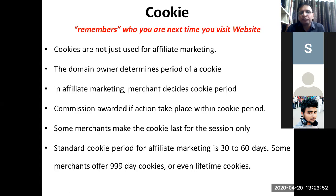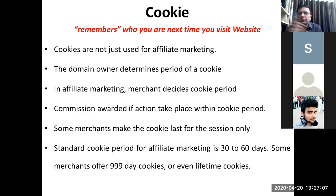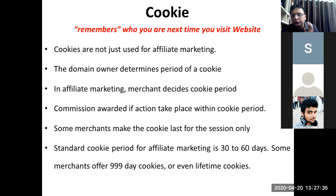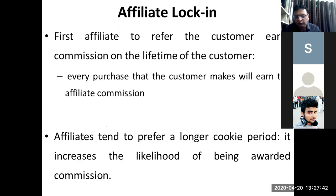Cookies need a defined time frame — how long the cookie will store the data. Generally that could be 30 to 60 days. If the customer goes to the affiliate website, clicks an advertisement, and goes to the merchant website, any repeat visit or transaction within that cookie period earns the affiliate a commission. Because of this, affiliates prefer a longer cookie period, which can go up to one year, 999 days, or even lifetime cookies.